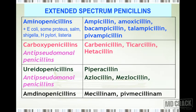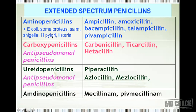The extended spectrum penicillins include four groups: aminopenicillins, carboxypenicillins, ureidopenicillins, and amdinopenicillins. Aminopenicillins cover the full spectrum of penicillin G but also act against gram-negative organisms — specifically E. coli, some Proteus organisms, Salmonella, Shigella, H. pylori (Helicobacter pylori), and Listeria. Because the spectrum is widened to include gram-negatives, these are called extended spectrum penicillins.